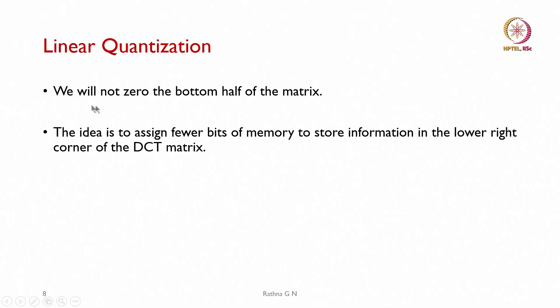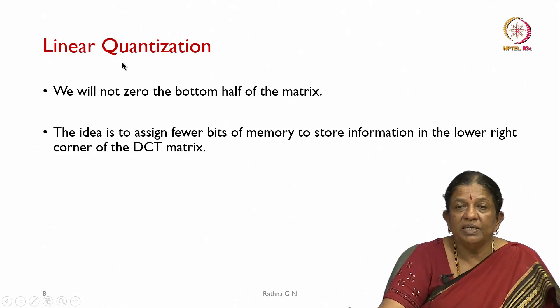We discussed linear quantization in previous classes. Instead of zeroing the bottom half of the DCT matrix as before, here the idea is to assign fewer bits of memory to store information in the lower right corner of the DCT matrix. So instead of making those values zero, the number of bits allocated to those values is made less, including linear quantization in the method.